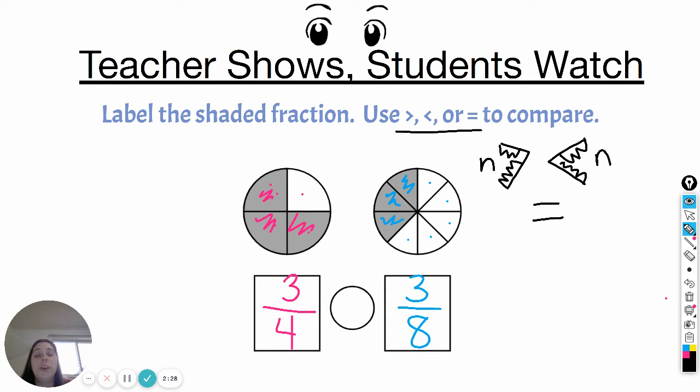We have to figure out which fraction takes up more space. If you look over here, it is pretty clear that there is a lot more shaded on this shape. Because it's only broken into fourths, each of those fourths is bigger. So this side is the bigger fraction.